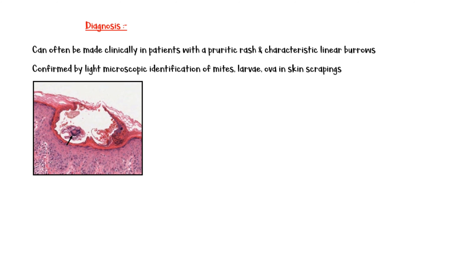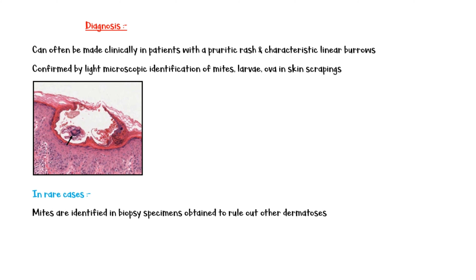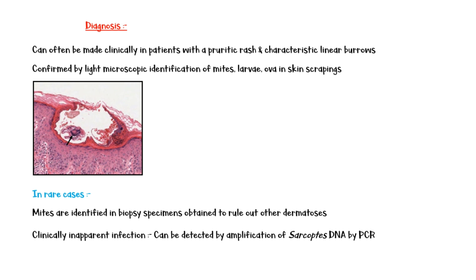Diagnosis of scabies can often be made clinically in patients with a pruritic rash and characteristic linear burrows. The diagnosis is confirmed by light microscopic identification of mites, larvae, and ova in skin scrapings. In rare cases, mites are identified in biopsy specimens obtained to rule out other dermatoses. Clinically inapparent infection can be detected by amplification of Sarcoptes DNA by polymerase chain reaction. In addition, elevated IgE titers and eosinophilia can also be seen.